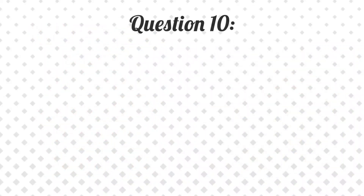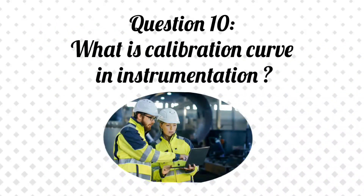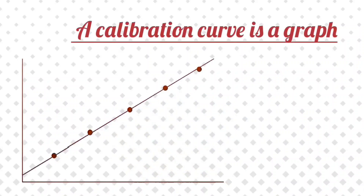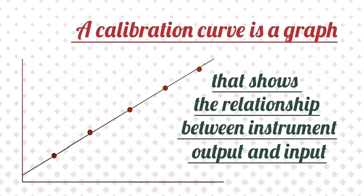Question 10: What is a calibration curve in instrumentation? Answer: A calibration curve is a graph that shows the relationship between instrument output and input.